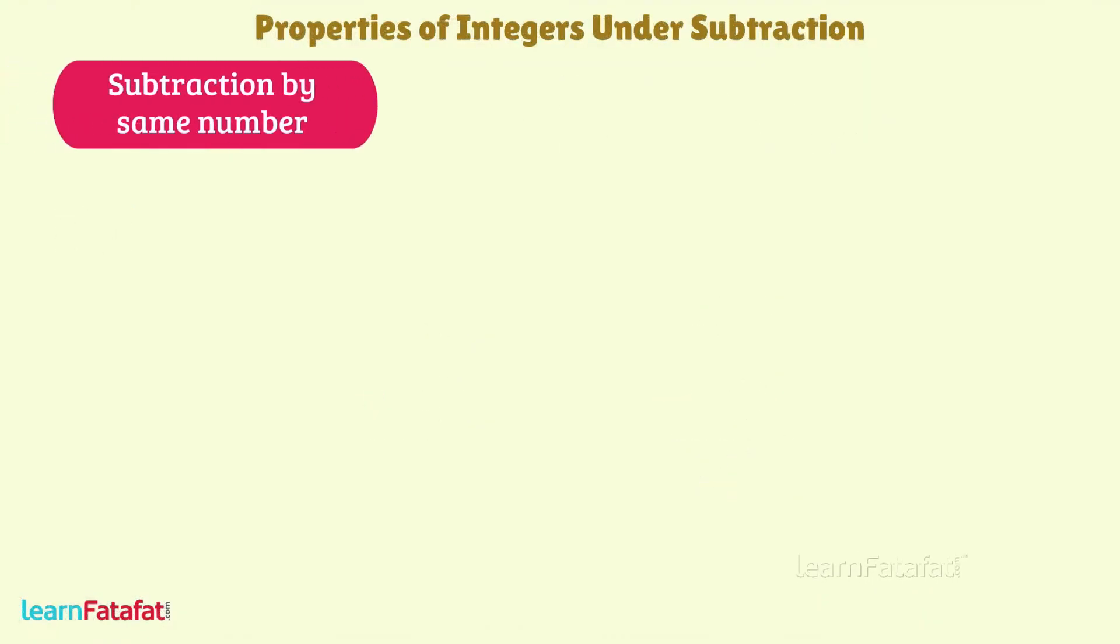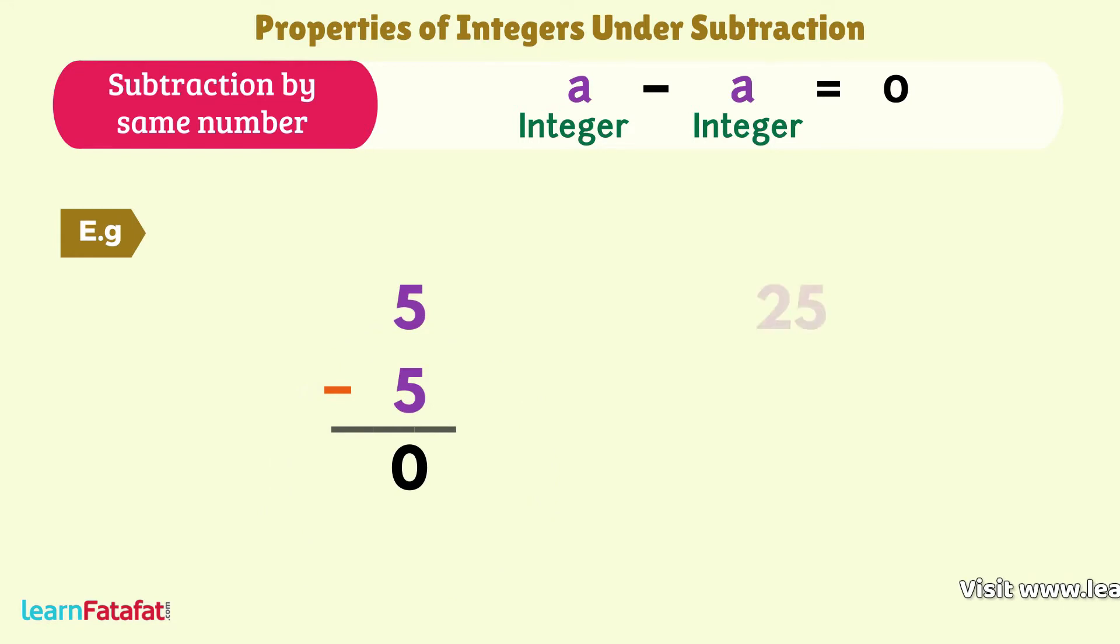Subtraction by same number: Subtraction of an integer with itself is always 0. a minus a equals 0. For example, 5 minus 5 equals 0. 25 minus 25 equals 0.